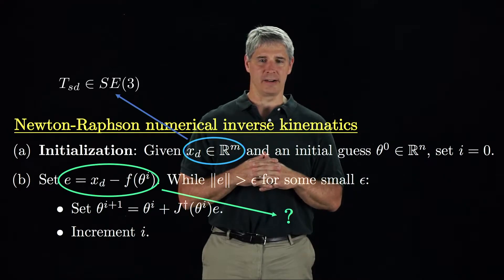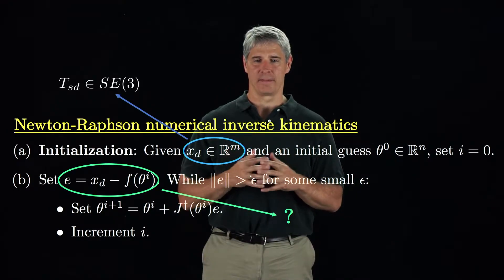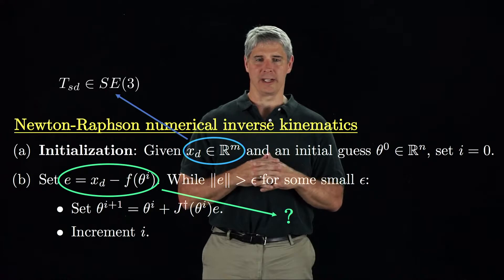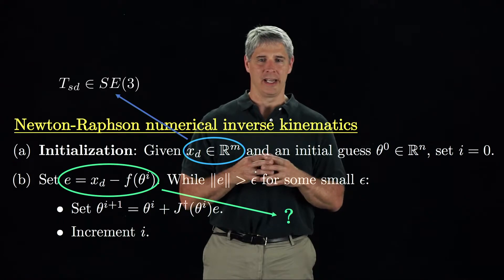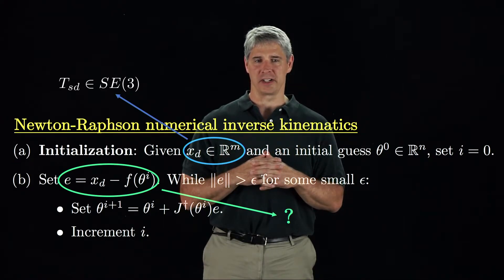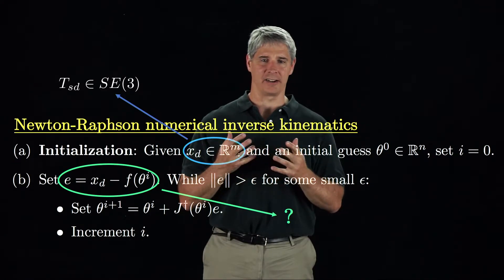We also need to replace the error vector E by something else. The proper way to interpret E is as a velocity which, if the end-effector followed it for unit time, it would move from the current configuration F to the desired configuration.